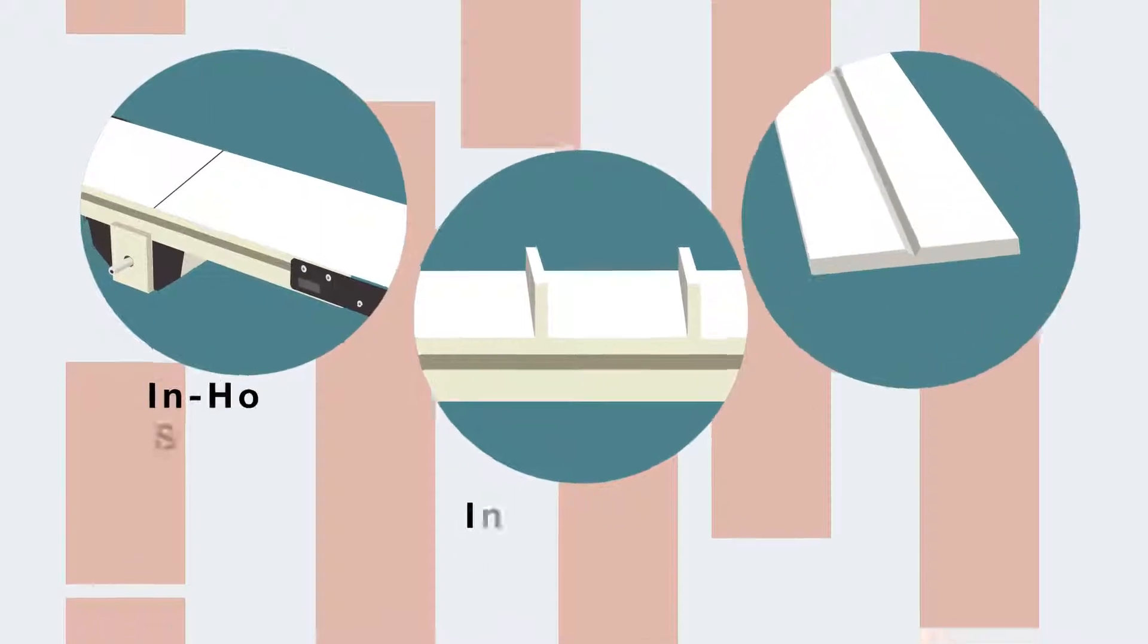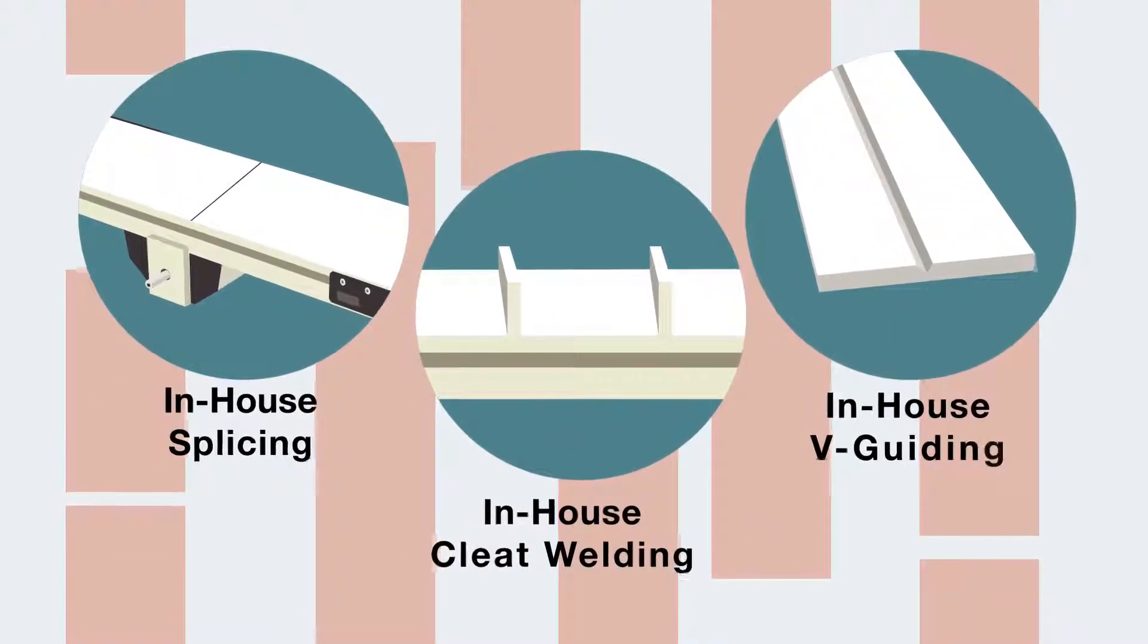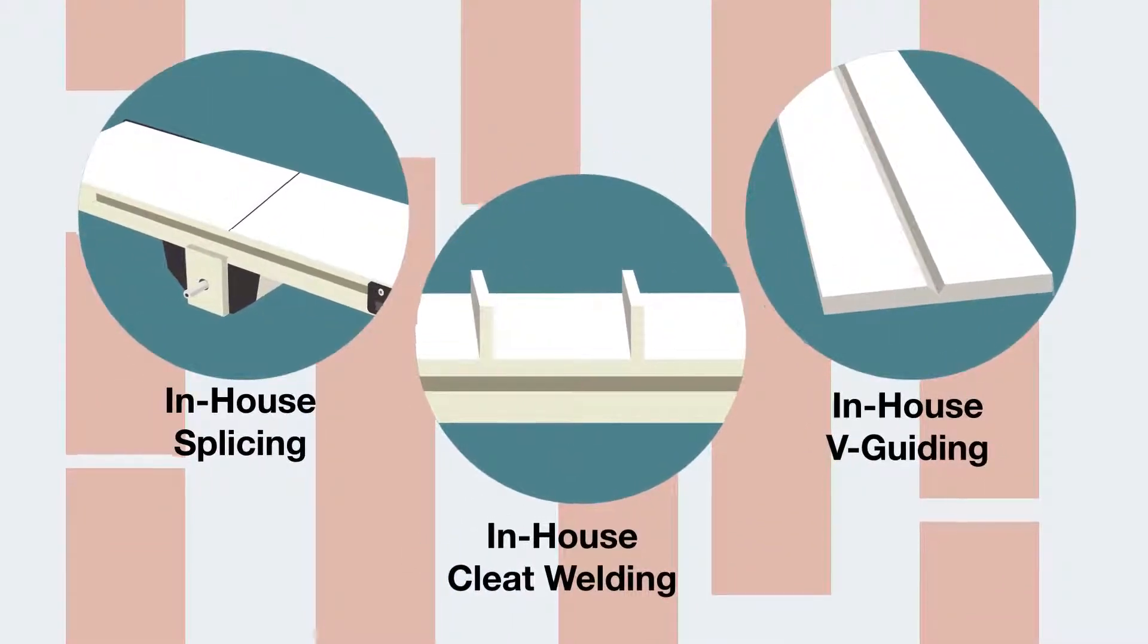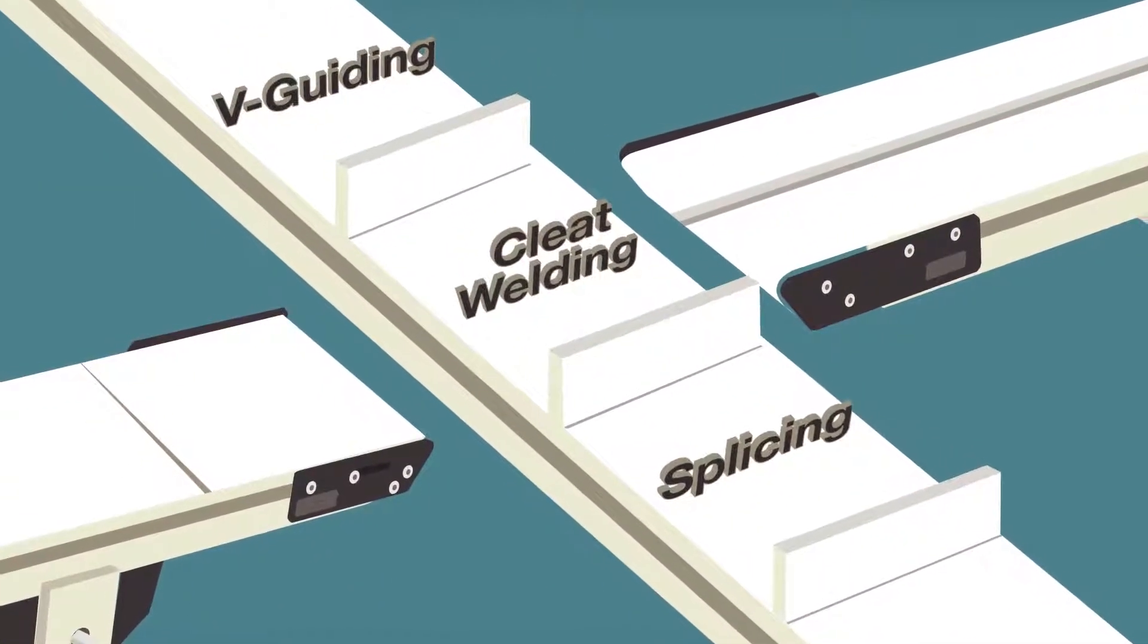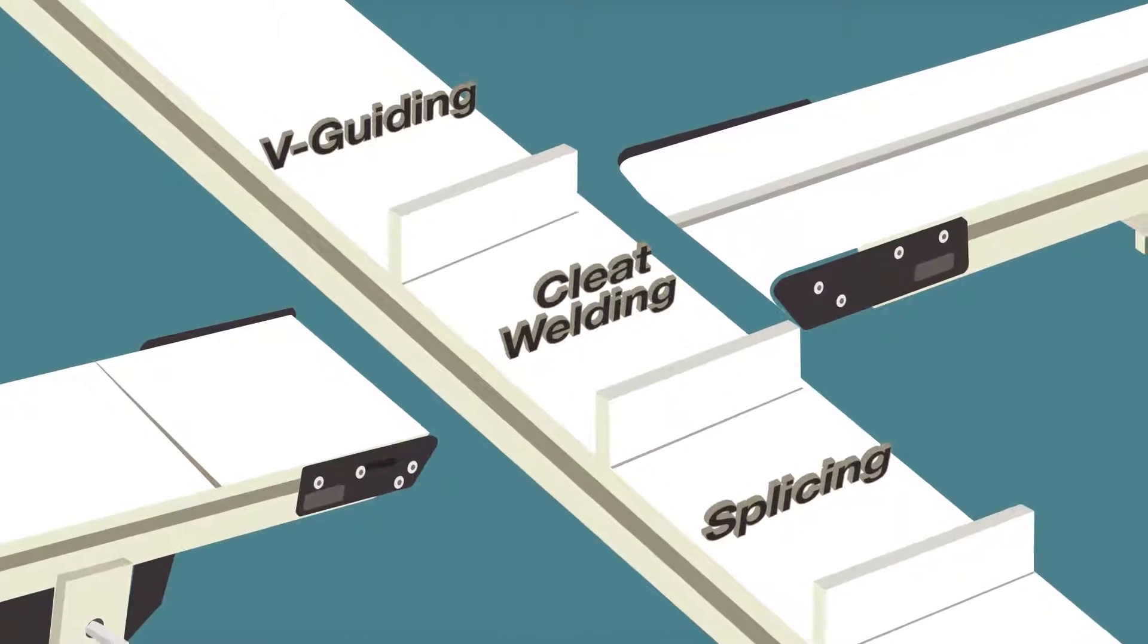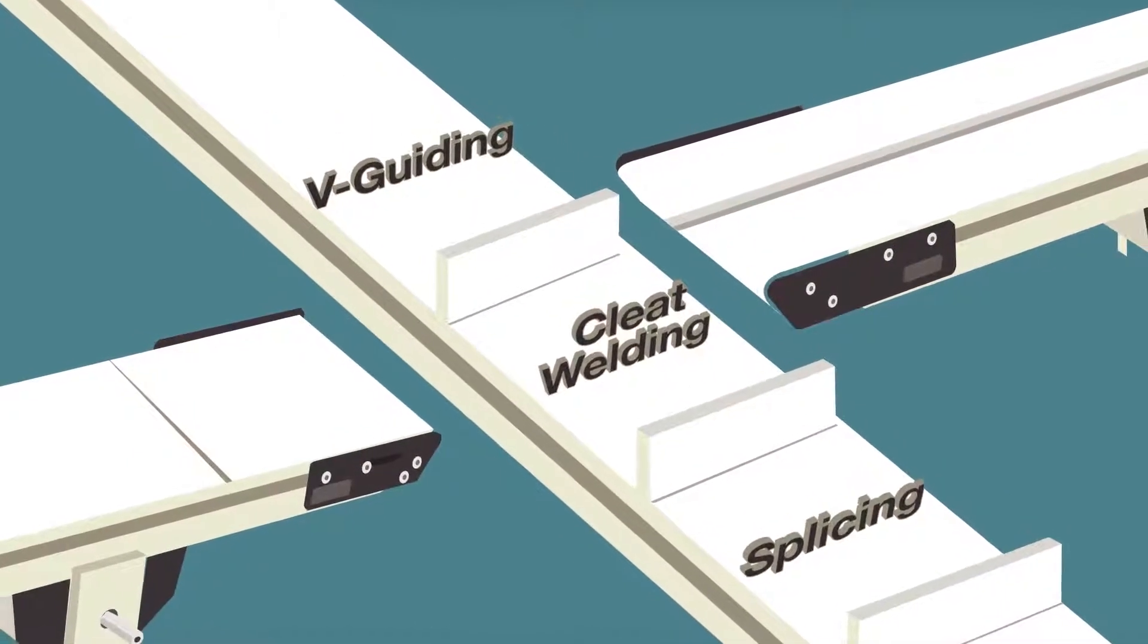Our in-house belting department makes us the fastest, most versatile manufacturer in the industry. Because most of our splicing, cleat welding, and V-Guiding techniques are applied in-house early in production, we offer the widest variety of belting solutions in the world.